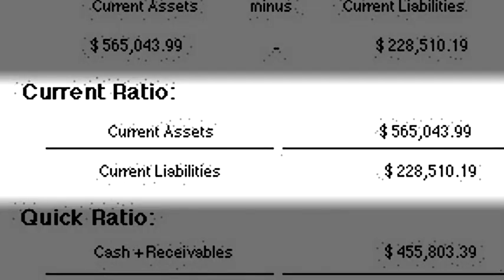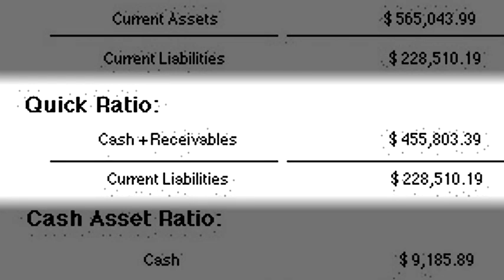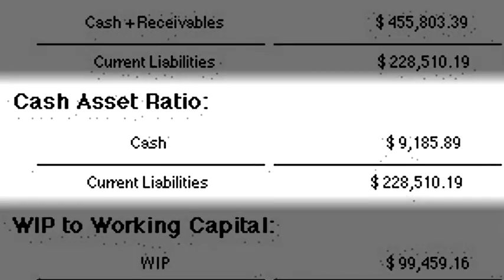The current ratio is simply calculated by taking the current assets and dividing them by the current liabilities. The quick ratio is calculated by taking the short-term investments and likewise dividing them by current liabilities. And the cash ratio is simply taking the cash balance and dividing it by the current liabilities.